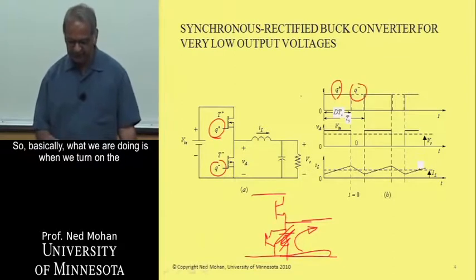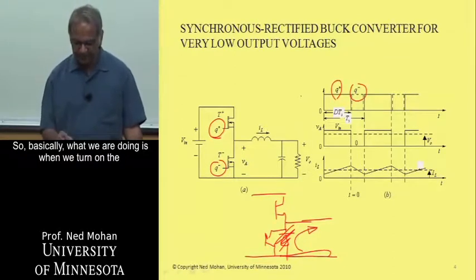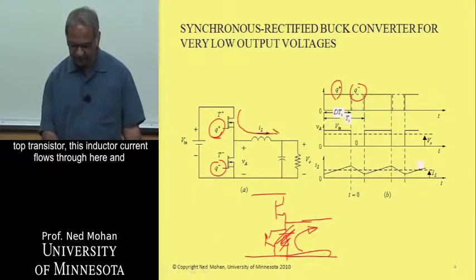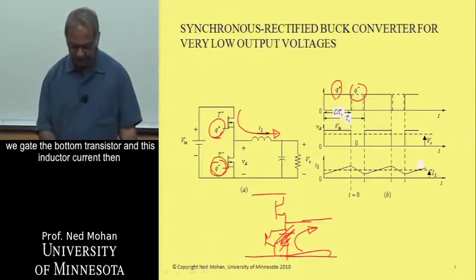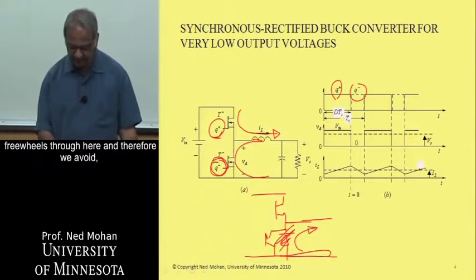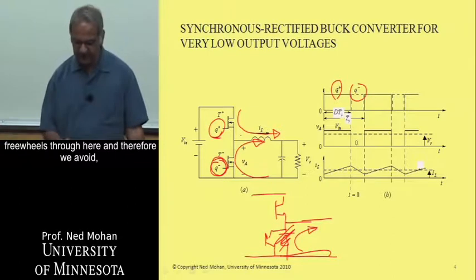So basically what we are doing is when we turn on the top transistor, this inductor current flows through here. And when it's time to turn off this transistor, we gate the bottom transistor and this inductor current then freewheels through here.